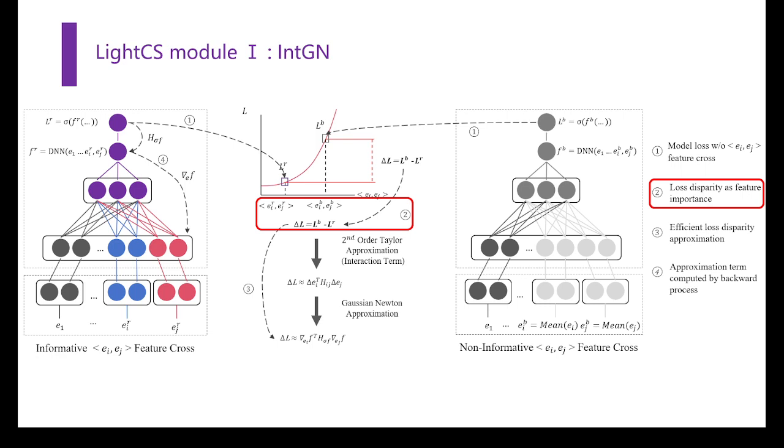By extension, by switching all single features from informative to non-informative, we can obtain all feature crosses importance by calculating the Hessian matrix. We use Gauss-Newton approximation to accelerate the calculation and achieve high efficiency.